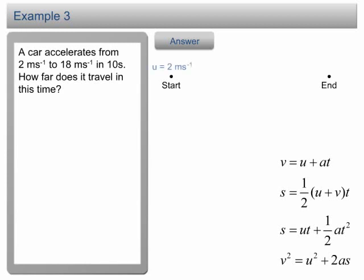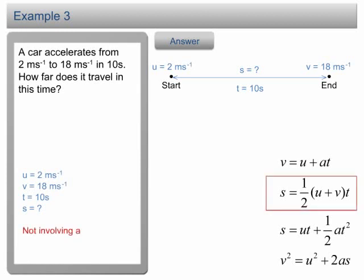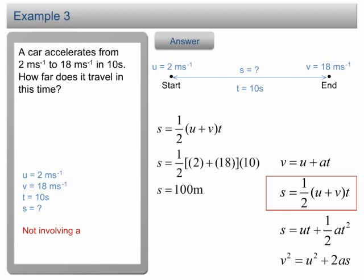In this case, the car started at 2 m per second and ended at 18 m per second. Time taken is 10 seconds and we need to find the displacement. We can see that acceleration is absent from the list. Therefore, we choose the equation s equals one half times (u plus v) times t.